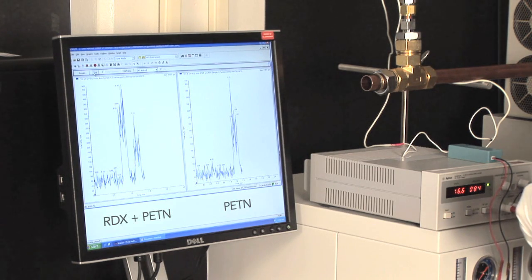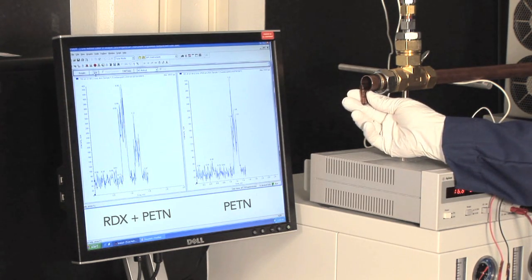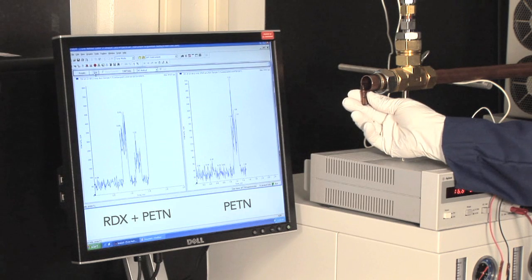C4 is a plastic explosive that contains predominantly RDX, and this is a vial containing C4. You can see the RDX response coming off of the C4 out of this vial.